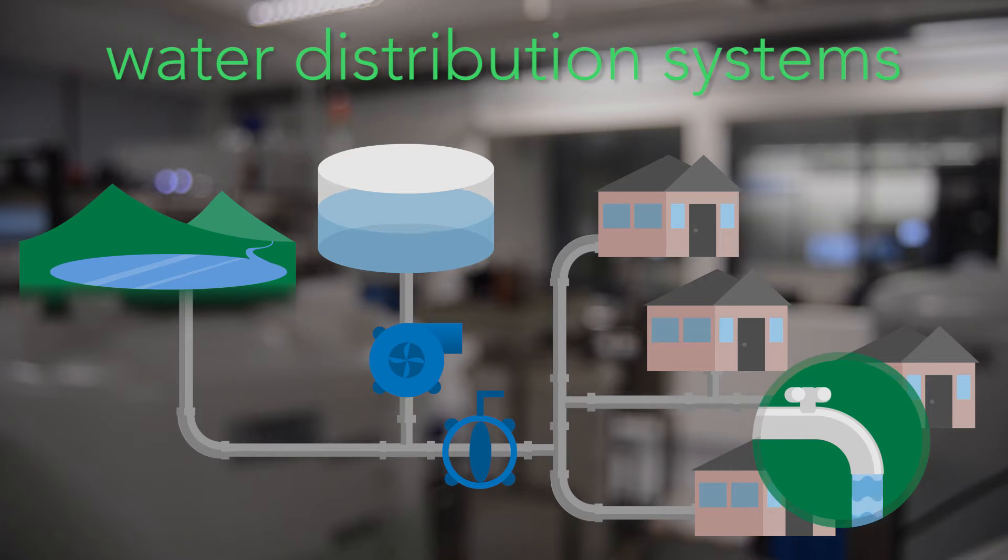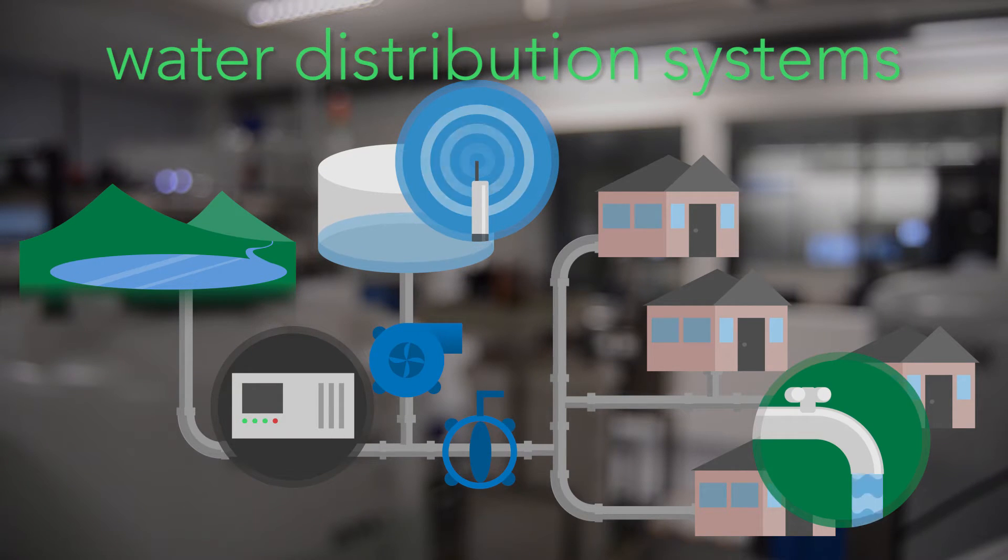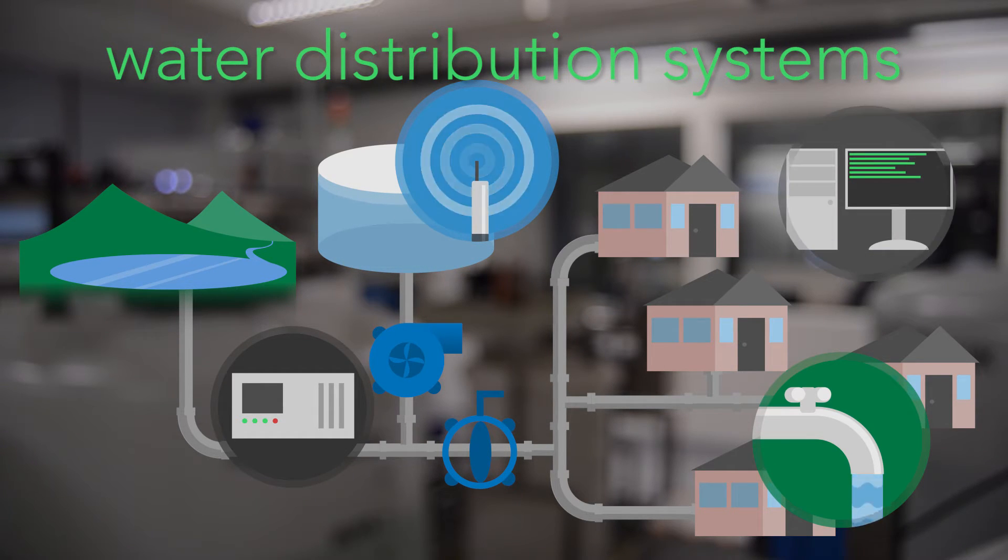All sorts of clever devices are being added to these systems, including sensors that can measure the level of water in a tank or the pressure in a pipe, and programmable logic controllers which can automatically turn on a pump when a tank is close to empty. There are also Supervisory Control and Data Acquisition systems, which monitor and control all of the devices across a network.